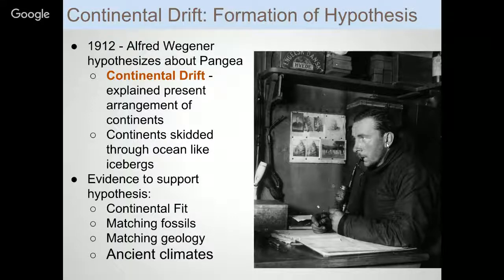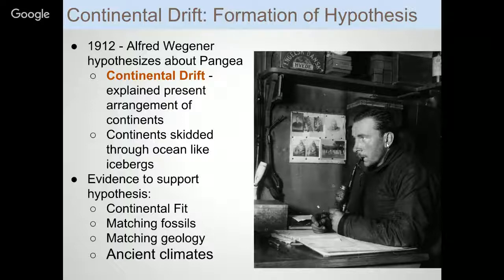Wegener's background was primarily in meteorology, and he spent a lot of time in the North Pole area examining icebergs and their movements and other weather features up there. He actually died up on the ice — he was in Greenland.